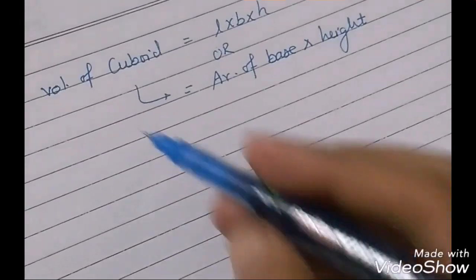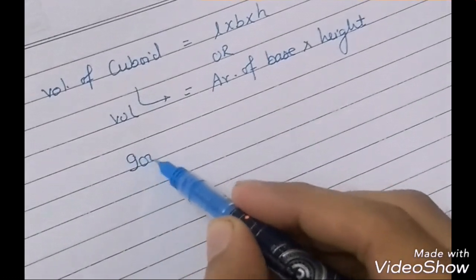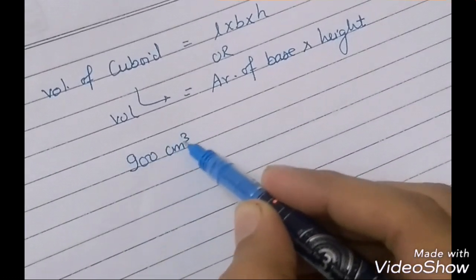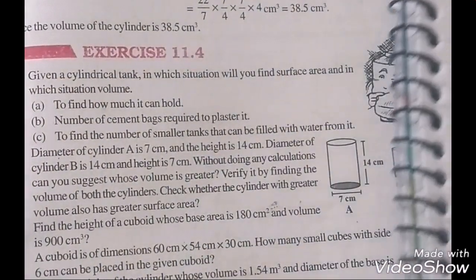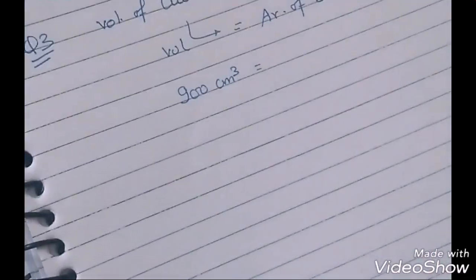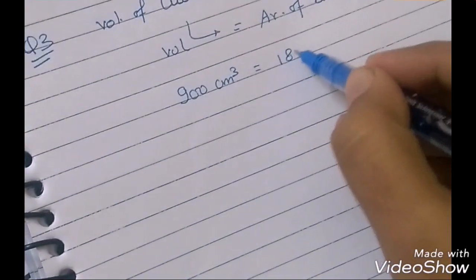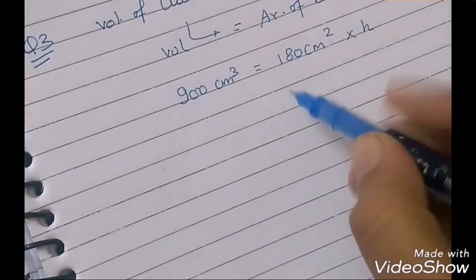Clear? What is the volume? What is the volume here? 900 cm³. Area of base? 180 cm². 180 cm² into height. Divide.